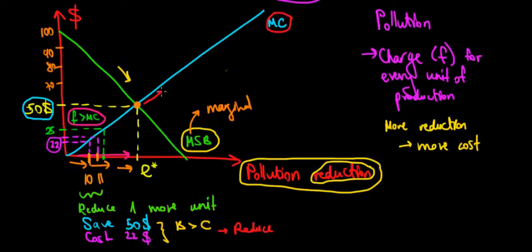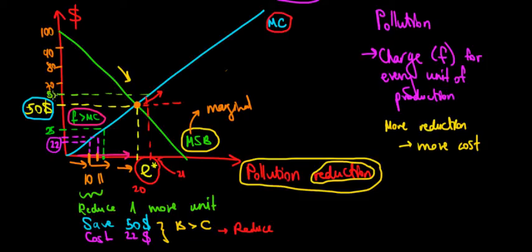Beyond this point, the marginal cost of reducing the pollution is greater than the $50 fee. So if we save $50 but go from the optimal level — say 20 units of pollution reduction — to 21 units, it costs us $55 to reduce one more unit. The cost is $55, but the benefit (savings in the tax) is $50. The cost is greater than the benefit, so we stop reducing pollution.